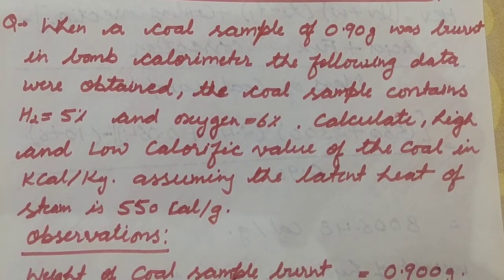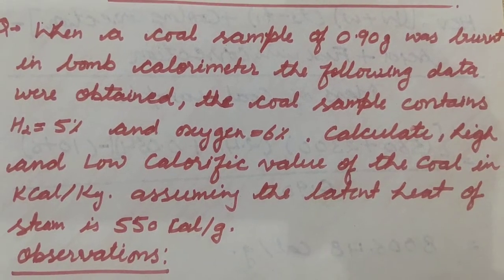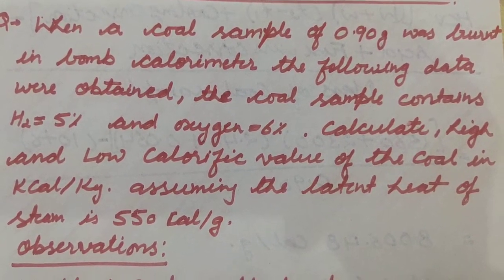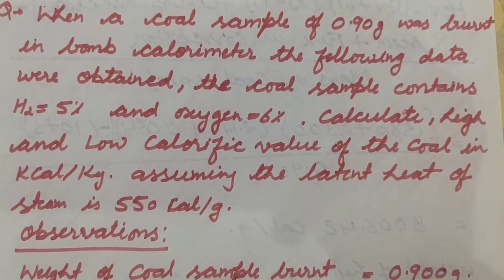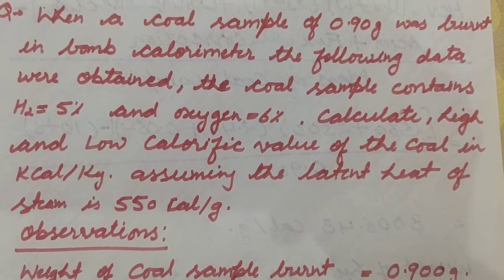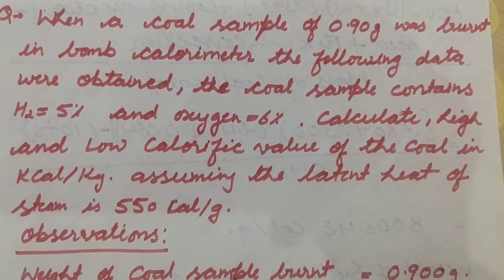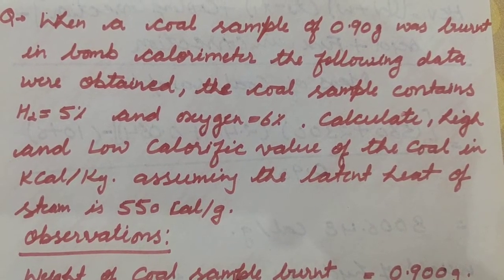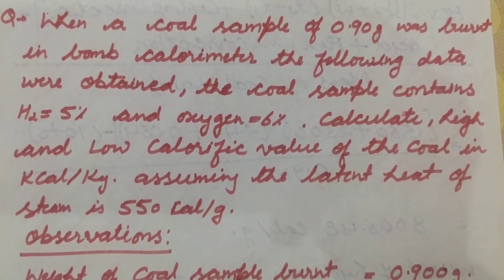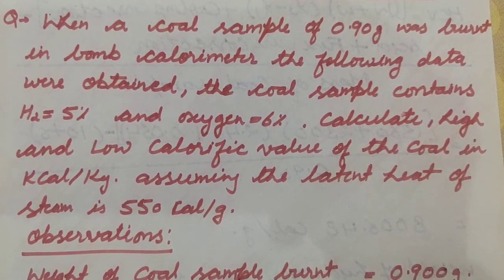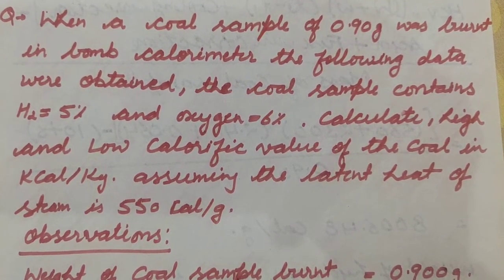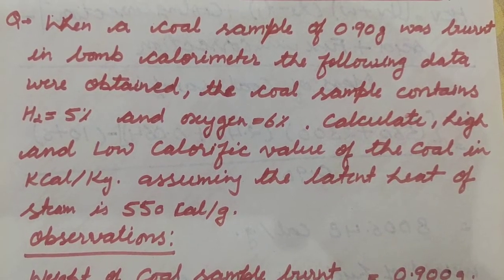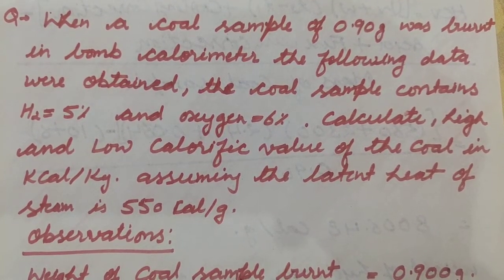The amount of coal sample is 0.90 gram — note it is in grams. The hydrogen percent is given, and we need to calculate both the higher calorific value and lower calorific value. The condition is that the latent heat of steam is 550 calories per gram.